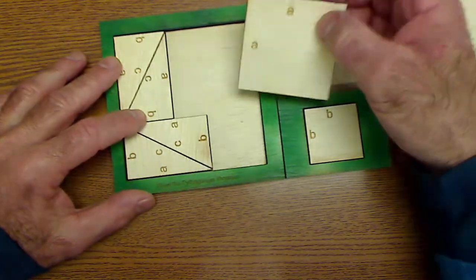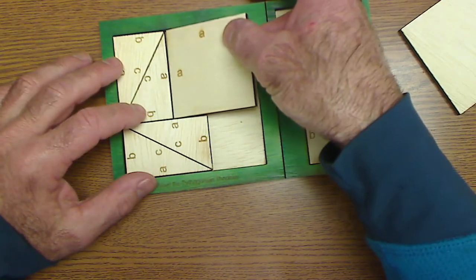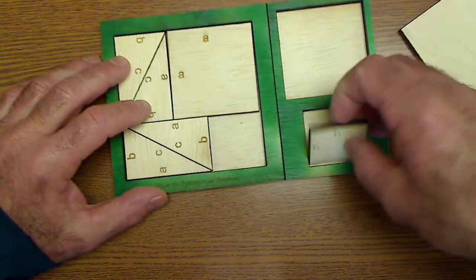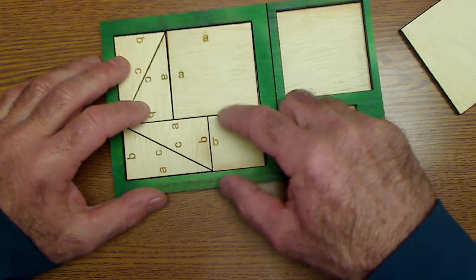Then right here on the side of the puzzle I have a square of length A. You can see it in there, and a square of B.